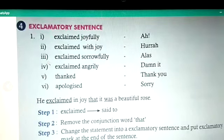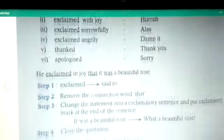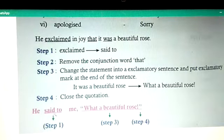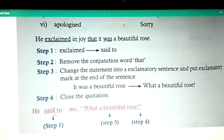Now we shall move ahead to exclamatory sentences. 'Exclaimed joyfully' means use 'ah'; 'exclaim with joy' means 'hooray'; 'exclaim sorrowfully' means 'alas'; 'exclaim angrily' means 'damn it'; 'thanked' means 'thank you'; 'apologize' means 'sorry.' Example: 'He exclaimed in joy that it was a beautiful rose.' Step 1: 'exclaimed' becomes 'said to.' Step 2: remove 'that.' Step 3: change to exclamatory form — 'What a beautiful rose!' Answer: 'He said to me, what a beautiful rose it is!'